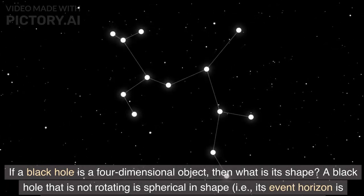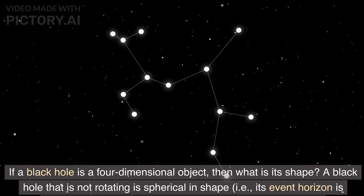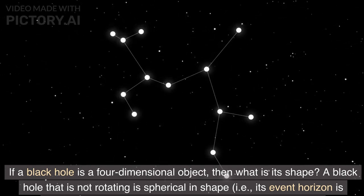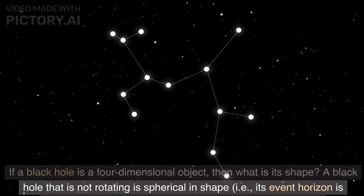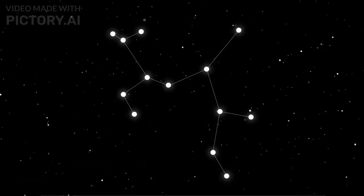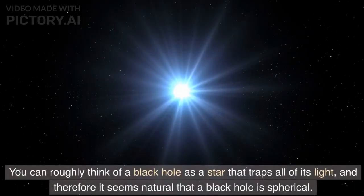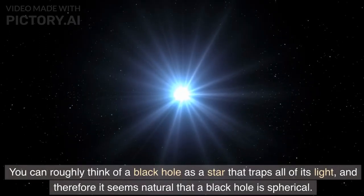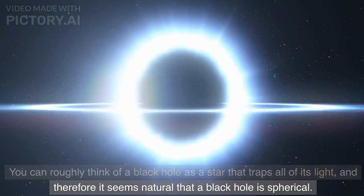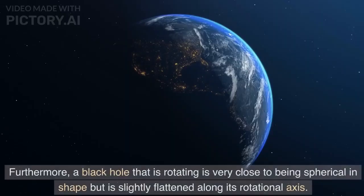If a black hole is a four-dimensional object, then what is its shape? A black hole that is not rotating is spherical in shape, i.e., its event horizon is spherical, and extends linearly through the time dimension. You can roughly think of a black hole as a star that traps all of its light, and therefore it seems natural that a black hole is spherical.